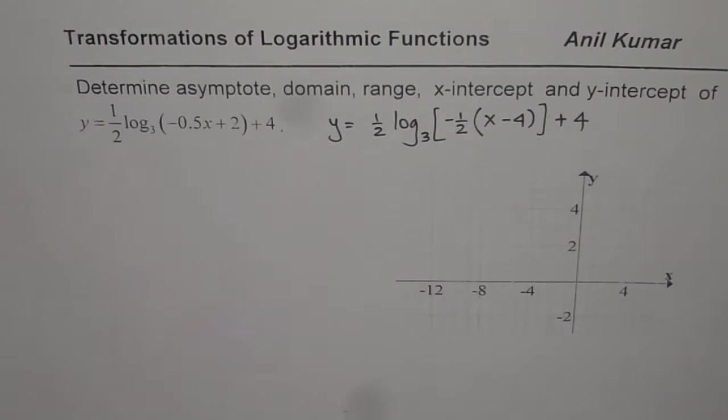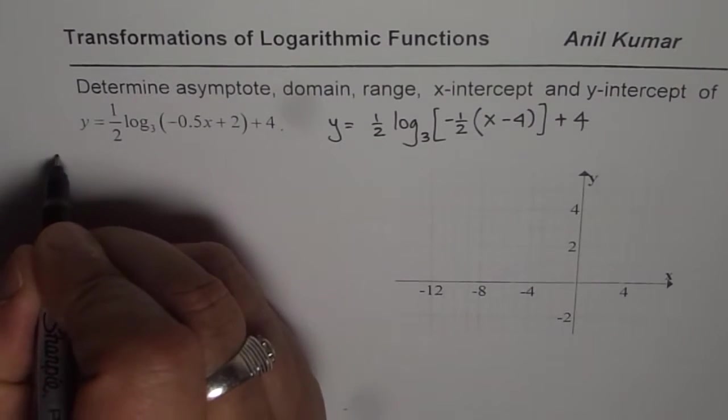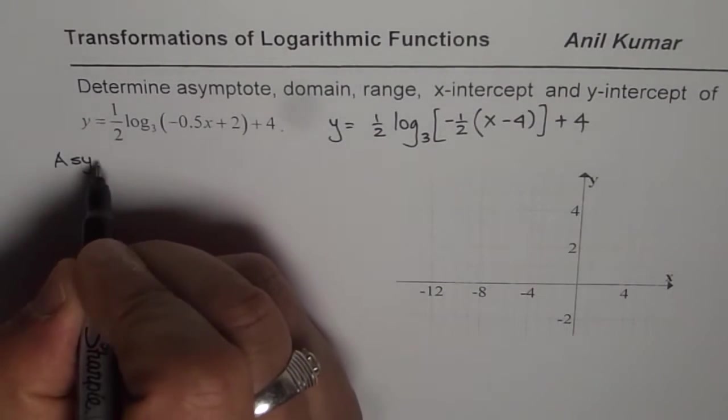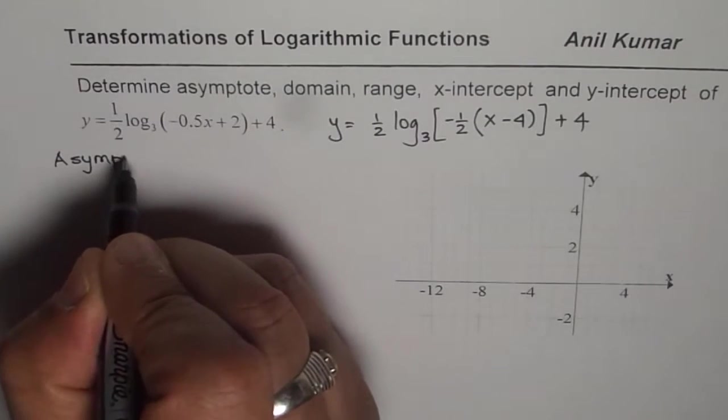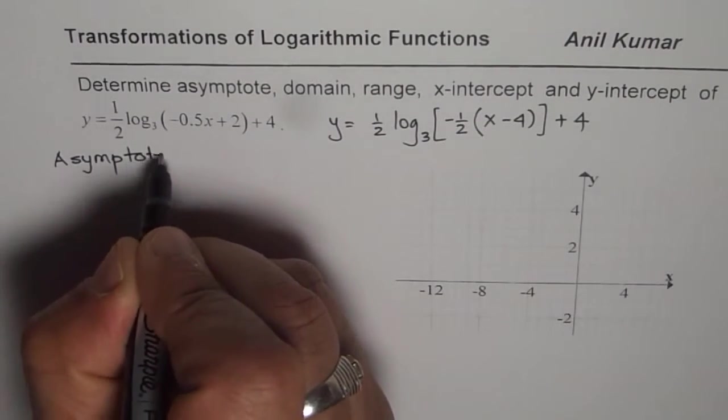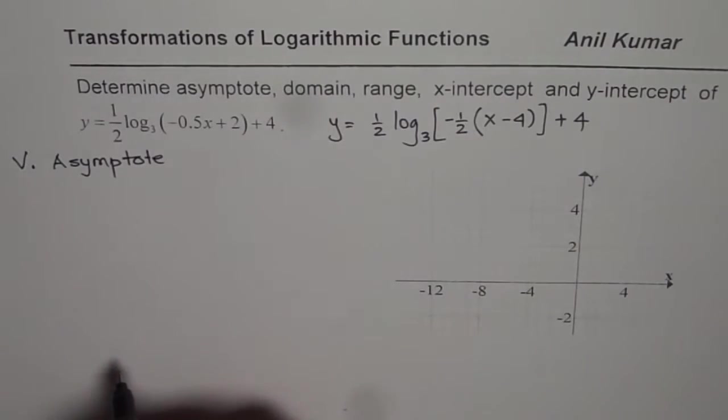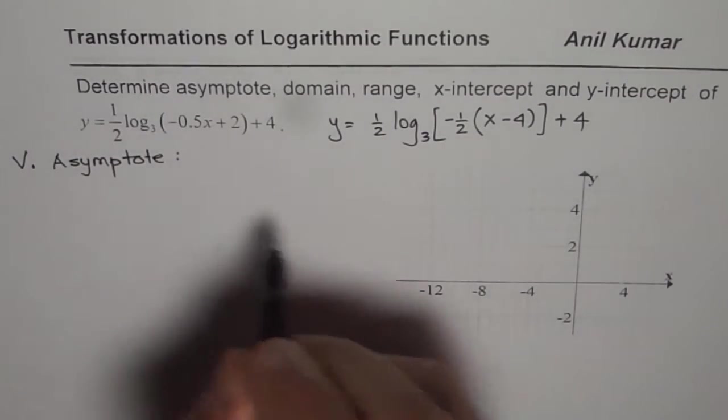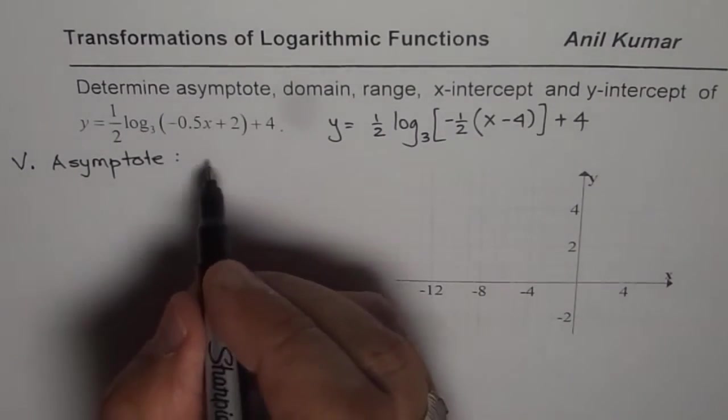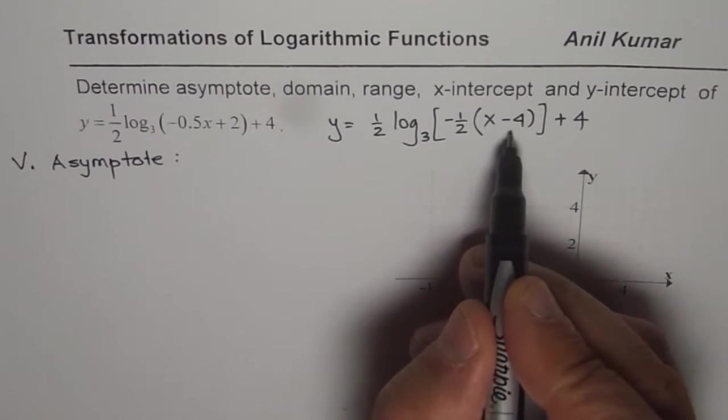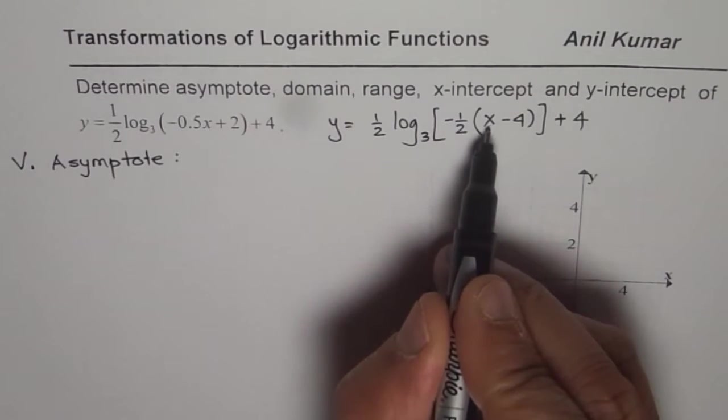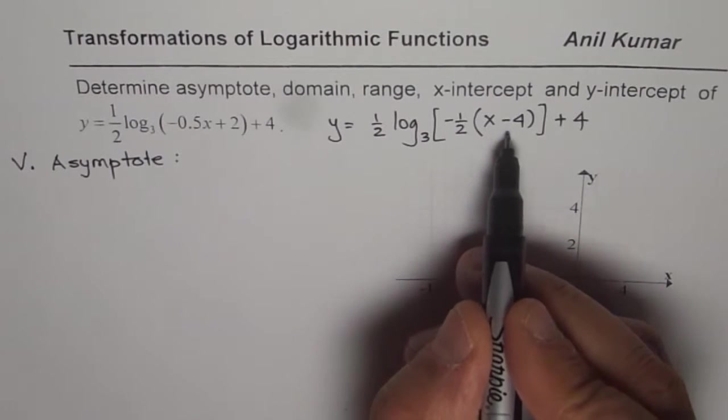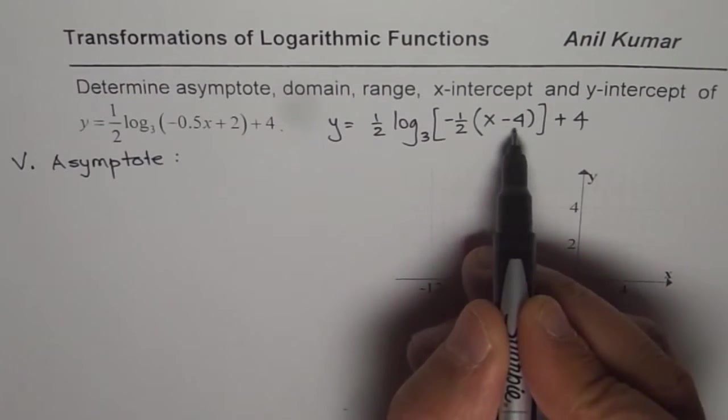When you write like this, it is very easy to read many of the parameters for this transformed function. Let's begin with the asymptote. What kind of asymptote do you expect? In a logarithmic graph, you always have vertical asymptote. Normally, the vertical asymptote is at x equals 0. But in this particular function, there is a horizontal translation of 4 units to the right. Do you see that? Because of that, it's x minus 4, so the vertical asymptote is at x equals minus 4.